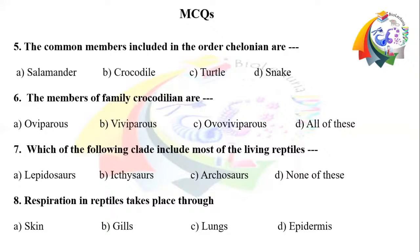Question number 7: Which of the following clades includes most of the living reptiles? Option A: Lepidosauria. Option B: Ichthyosauria. Option C: Archosauria. Option D: none of these. Question number 8: Respiration in reptiles takes place through. Option A: skin. Option B: gills. Option C: lungs. Option D: epidermis.